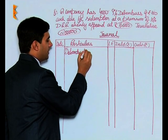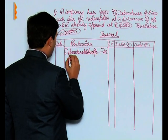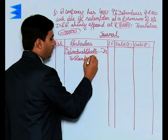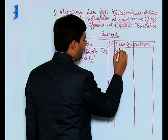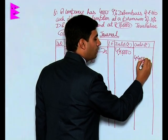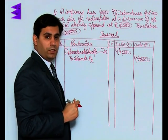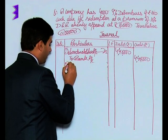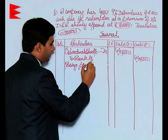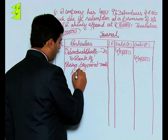Debenture holders account debited to bank 4,40,000. This was the amount due to debenture holders, 4,00,000 on account of face value of debentures and 40,000 on account of premium on redemption. The narration would be being payment made to debenture holders.